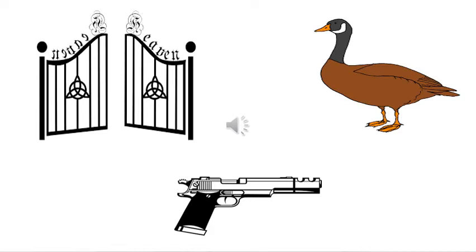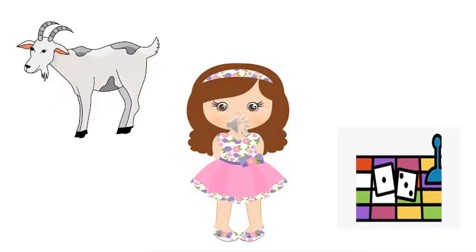G, gate. G, goose. G, gun. We can also say G is for goat, G for girl, and G for games.